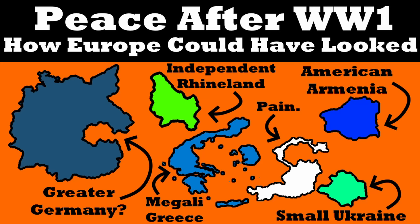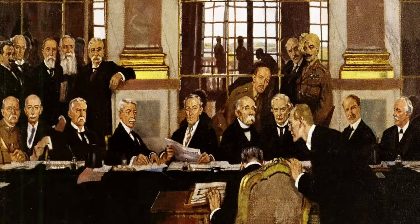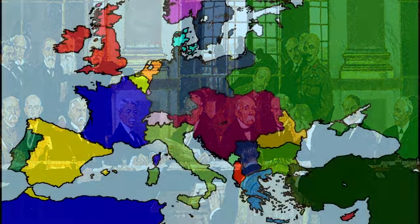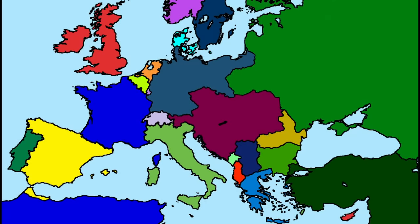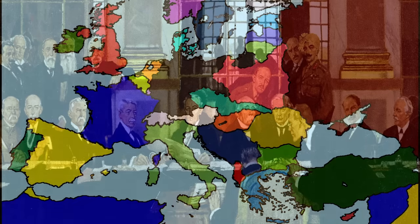Welcome! In today's video, we are going to explore the Paris peace treaties after the First World War, how they shaped Europe, and more importantly, how they might have been different in realistic and not so realistic ways. Exploring the goals of the Entente nations in the process, let's dive in.